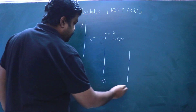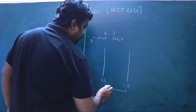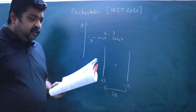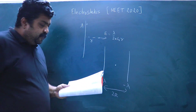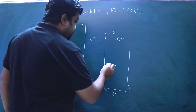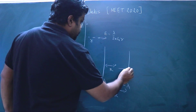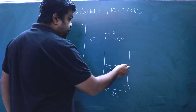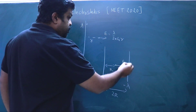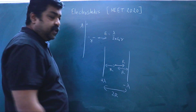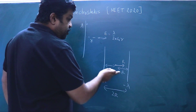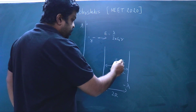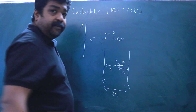We have two line charges: +λ and −λ separated by distance 2r. At the midpoint, the distance to each line charge is r. For +λ, the electric field E1 at the midpoint is directed away (to the right). For −λ, the electric field E2 is also directed towards it (to the right). So both E1 and E2 are in the same direction.